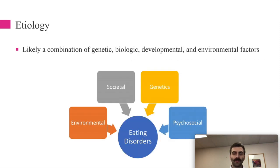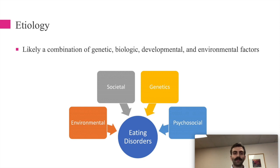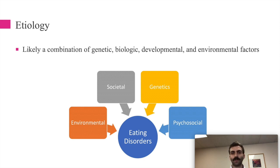The etiology of eating disorders is likely multifactorial. What likely happens is someone has a genetic risk for an eating disorder, and then a life event — stress, abuse, trauma — causes those genes to be expressed. So it's probably a combination of genetic risk plus a stressor that triggers the eating disorder to manifest. The causes are complicated.